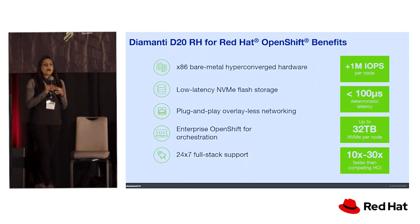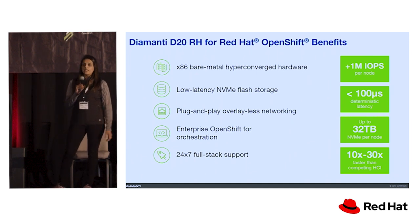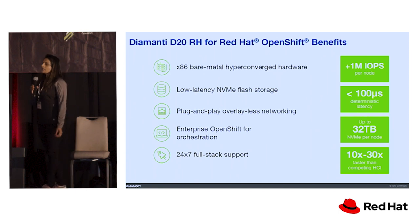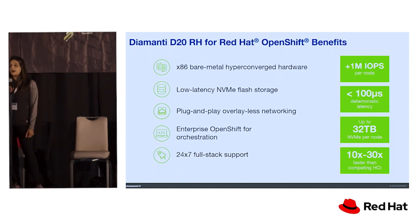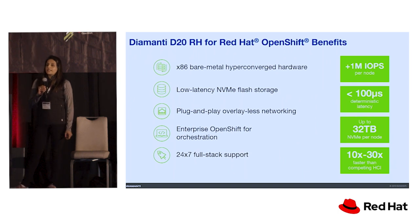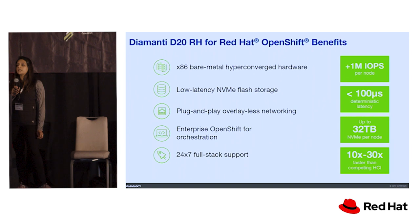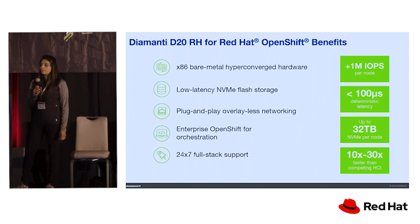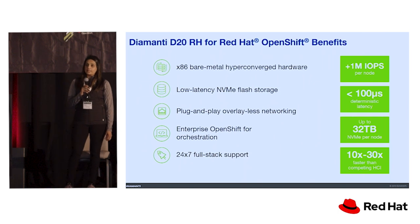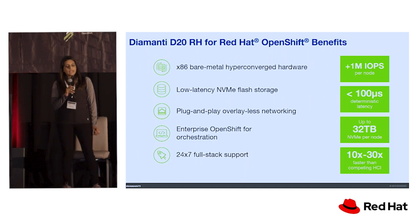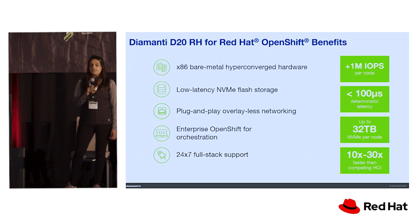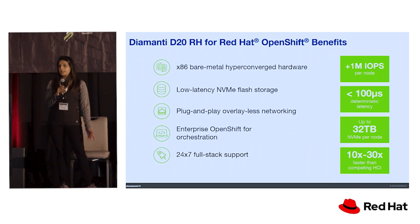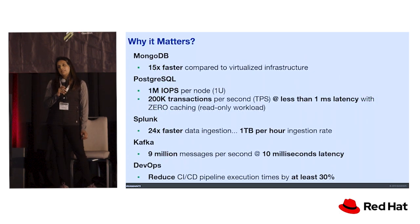You might be thinking why it matters to run enterprise applications onto an HCI platform. DMRT has worked over five years with different customers and partners like MongoDB. Running MongoDB on DMRT's HCI platform, it was able to achieve 15 times faster performance compared to running on a virtualized infrastructure. With Postgres, it achieved 200K transactions in under one millisecond latency. With Splunk, it achieved 24 times faster data injection at one terabyte per hour injection rate. With Kafka, it achieved nine million messages per second at 10 milliseconds latency.